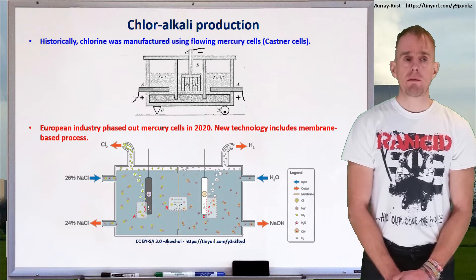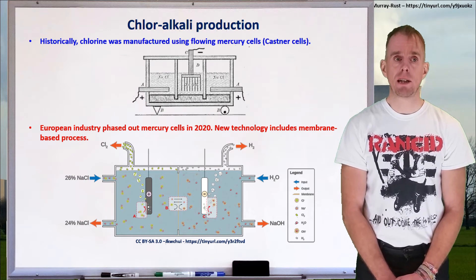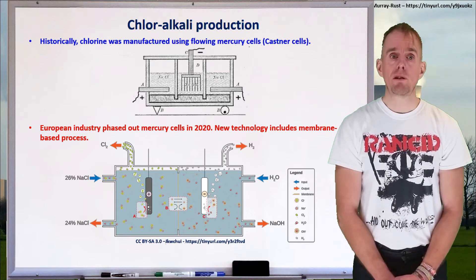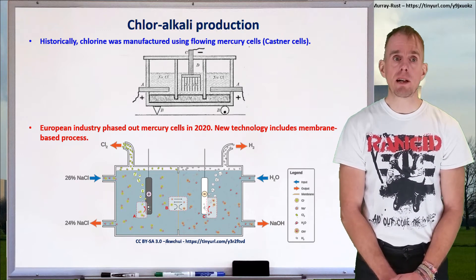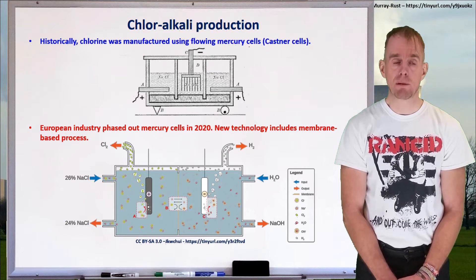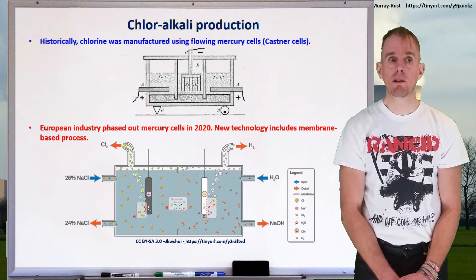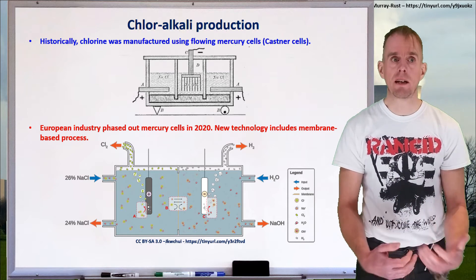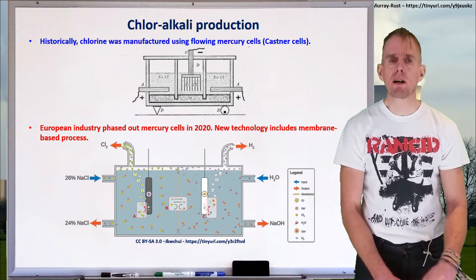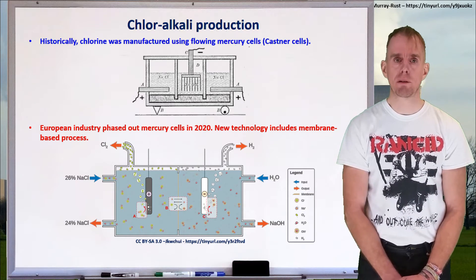Chlorine production using mercury cells was finally phased out in Europe in 2020. All through the 1990s, new technology was being pioneered — primarily membrane-based electrochemical cells, where a membrane selectively permeable to certain ions replaces the flowing mercury electrode. These are far more environmentally benign compared to the old mercury-based processes.